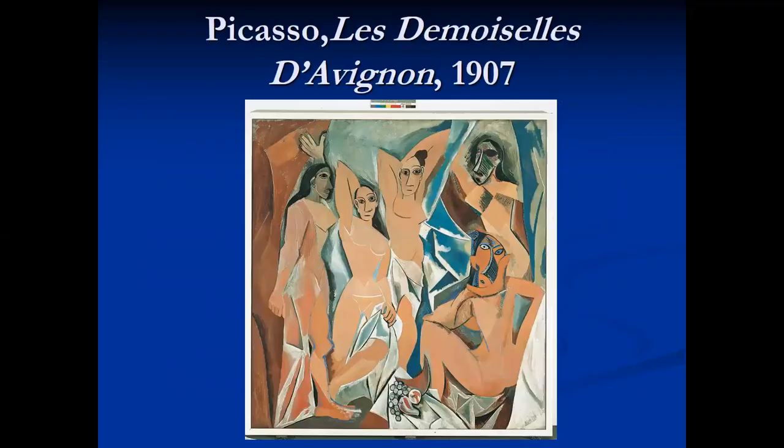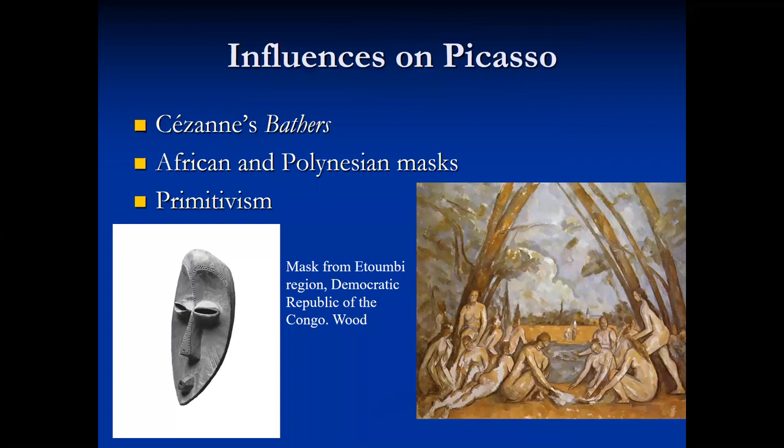Picasso's Les Demoiselles d'Avignon, The Ladies of Avignon, shows five nude female figures, most likely prostitutes, posing and gazing at the viewer. The background and the women themselves are made up of fragments of geometric shapes so the images appear to be shown from multiple angles. Picasso was influenced by Paul Cézanne, especially the work of Bathers, and by primitivism — the fascination with tribal art from Africa, the South Pacific and Indonesia, and very early European art and folk art.